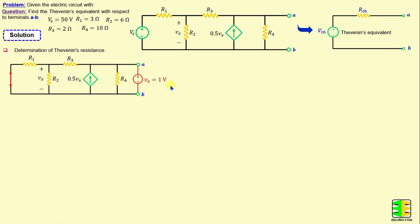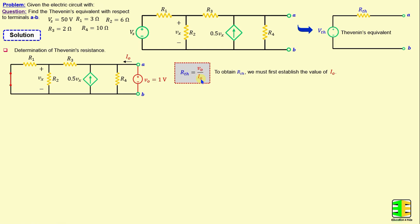Now our goal is to find the current IO through the terminals. Once we establish the current IO, RTH can be calculated by V0 over IO. In order to calculate IO, I will apply the nodal analysis method. I will consider I1 as the current through resistor R1, I2 as the current through R2, I3 as the current through R3, and I4 as the current through R4.